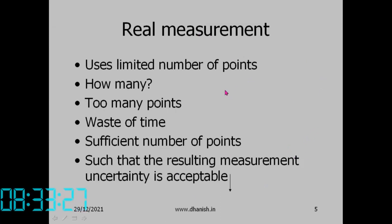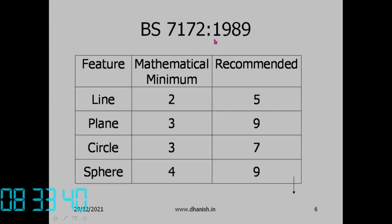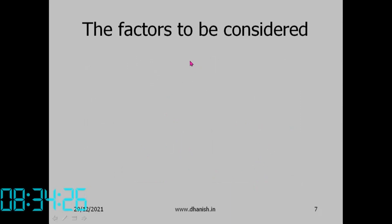One early standard, BS 7172 published in 1989, suggested minimum and recommended point counts per feature: for a line, minimum 2, recommended 5; for a plane, minimum 3, recommended 9; for a circle, minimum 3, recommended 7; for a sphere, minimum 4, recommended 9. However, this is not really sufficient according to more recent research.